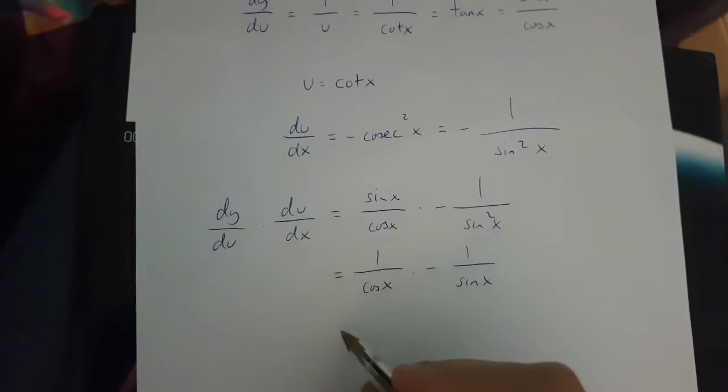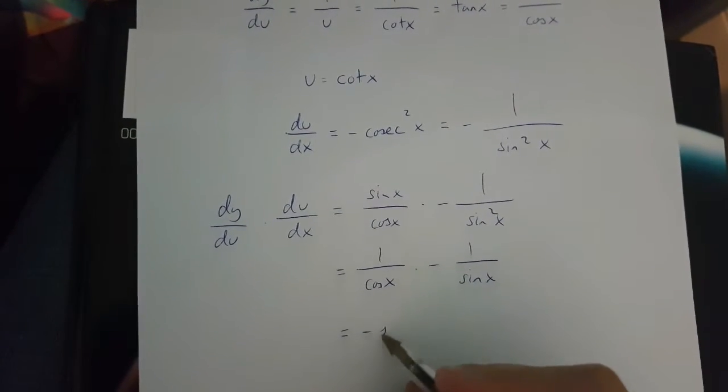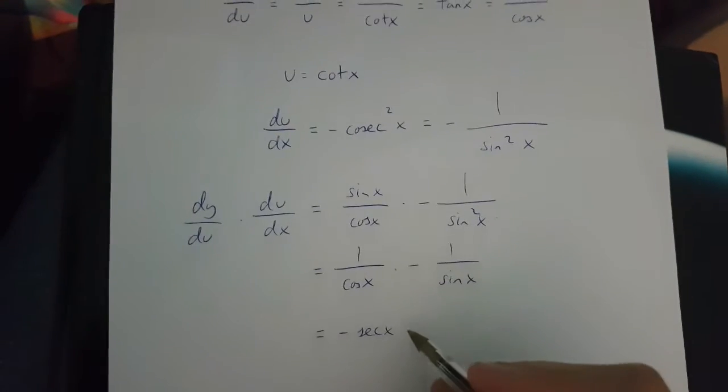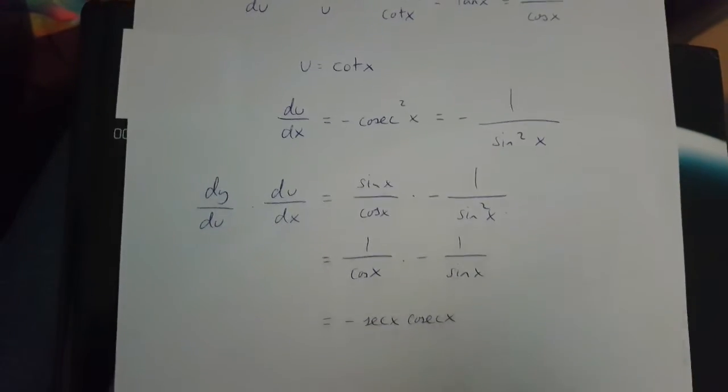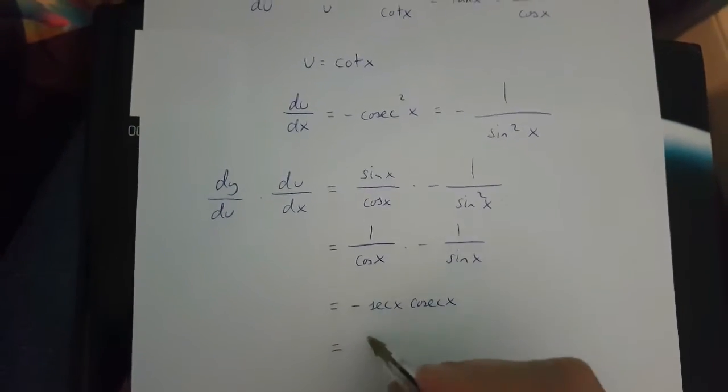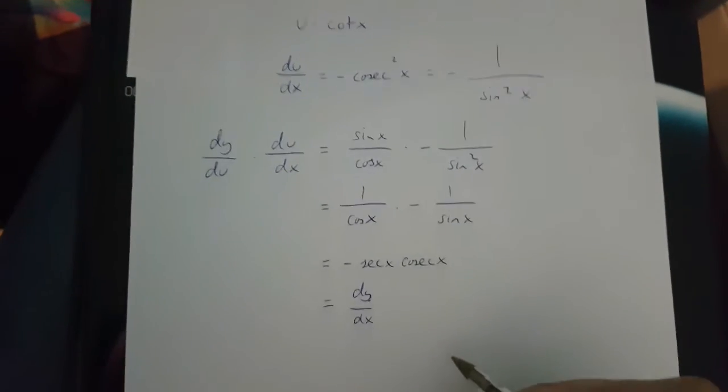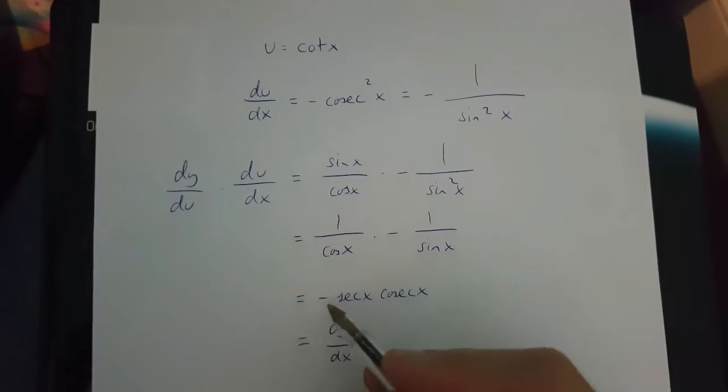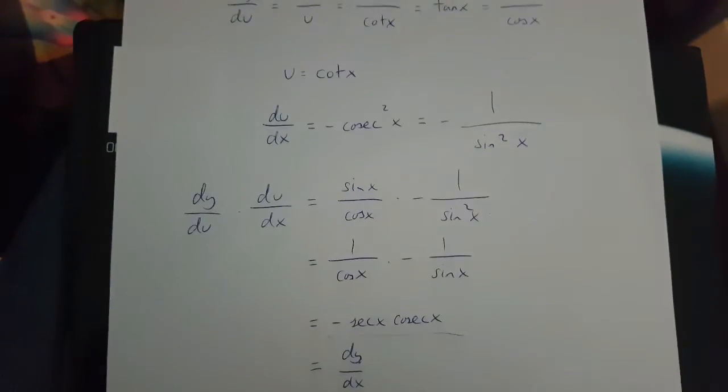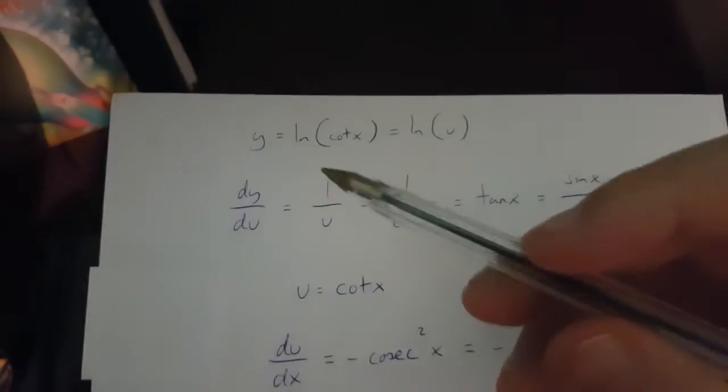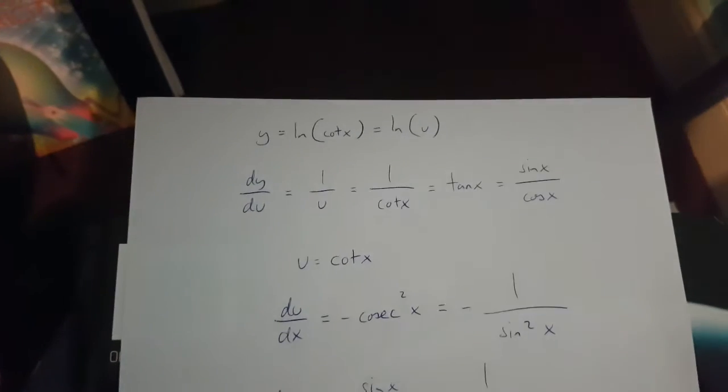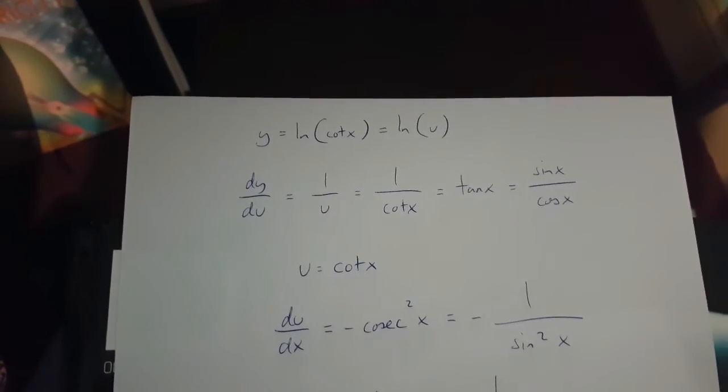what we get is 1 over cosx times minus 1 over sinx. And this turns out to be minus secx times cosecx, which is dy over dx.